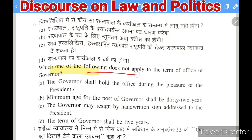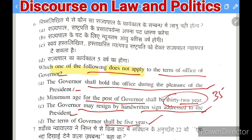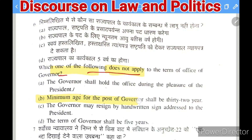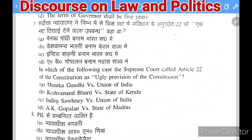Next question: which one of the following does NOT apply to the term of office of Governor? Options: (A) Governor holds office during the pleasure of the President, (B) minimum age for the post of Governor shall be 32 years, (C) Governor may resign by handwritten address to the President, (D) term of Governor shall be five years. The correct answer is B — the minimum age is 35 years, not 32.